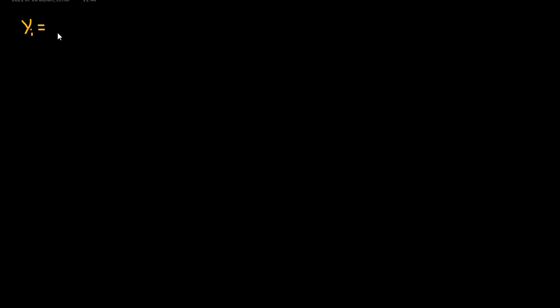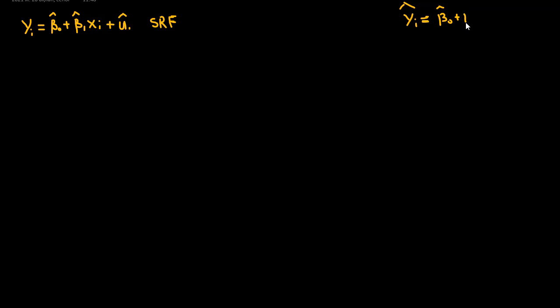In this video we're going to talk about the random and fixed variable and their properties. My sample regression function is: y_i = β̂₀ + β̂₁x_i + u_i. And the predicted line of my sample regression function is: ŷ_i = β̂₀ + β̂₁x_i.